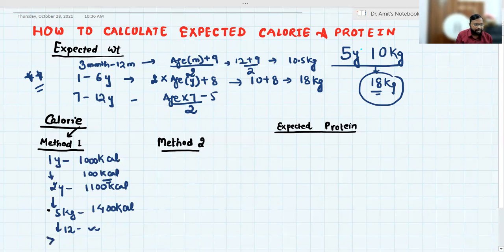And beyond 12 year, we have 2400 kilocalorie. This is a simple method. This is bedside. If you want to calculate the exact calorie, you have to follow the ICMR guideline.